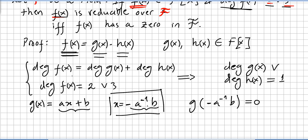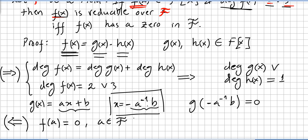So we have proved one direction: if f(x) is reducible over the field, it has a zero. Now let us prove the other direction. If there exists an element a in the field that is a zero of the polynomial, then (x − a) will be a factor of f(x), and that means f(x) is reducible over the field.